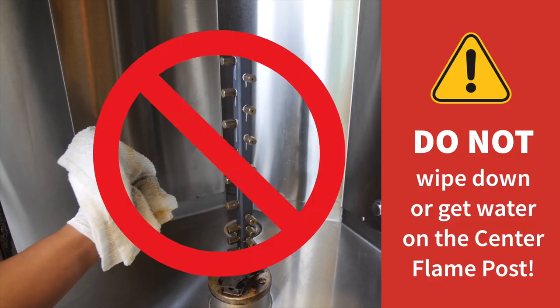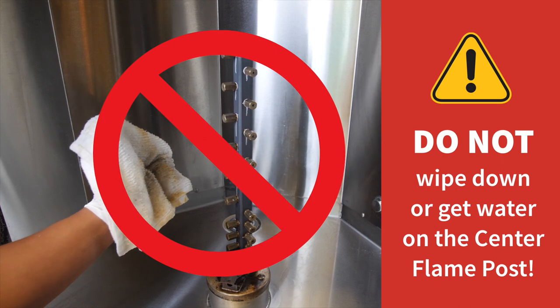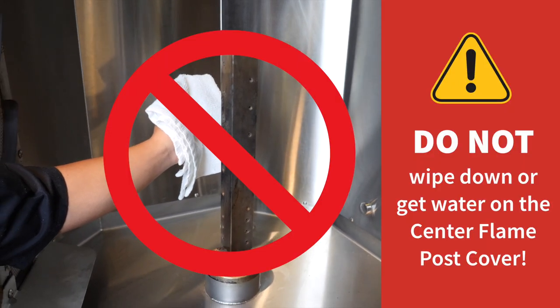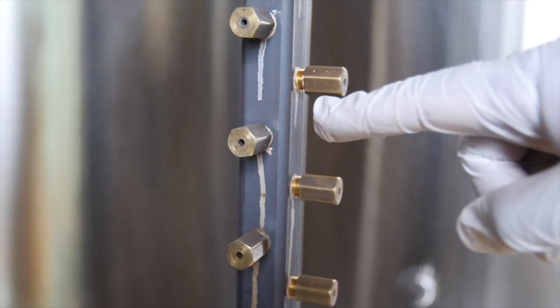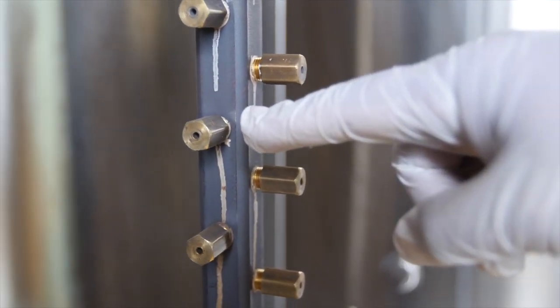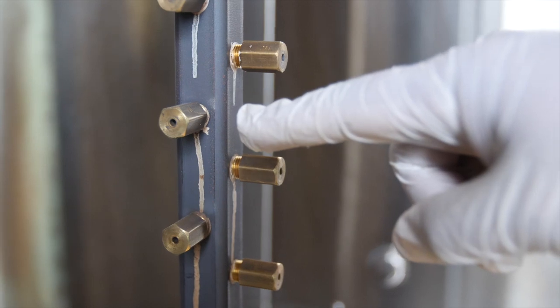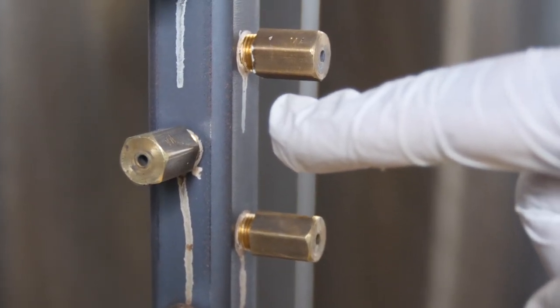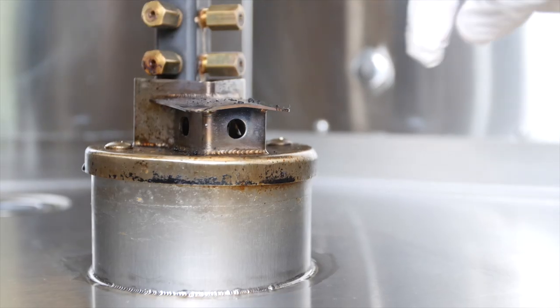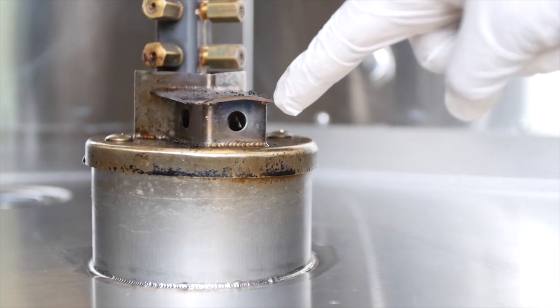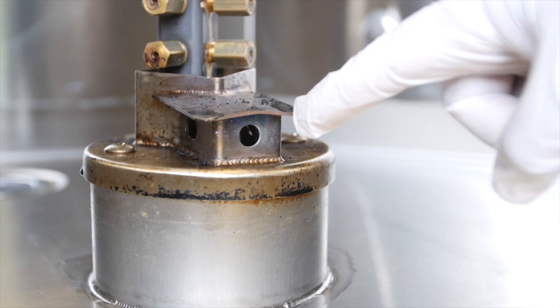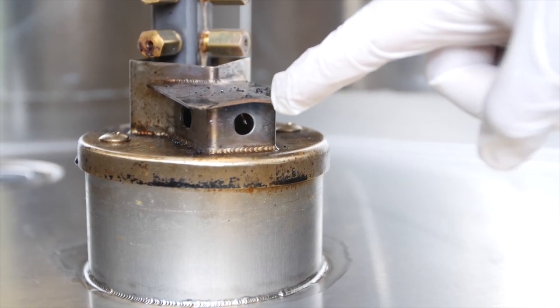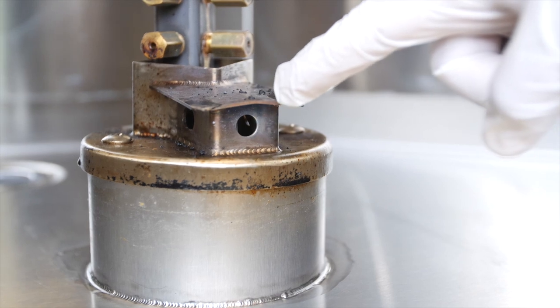While you're cleaning the chamber, do not wipe down or get water on the center flame post. Do not wipe down or get water on the center flame post cover as well. If you notice any buildup in the burner jets themselves, do not attempt to clean the jets yourself. These jets should be removed and cleaned individually by a gas technician. You will also see jets at the base of the burner. If you notice buildup that might require further cleaning, do not attempt to do so. Please call Woodstone Service for advice.